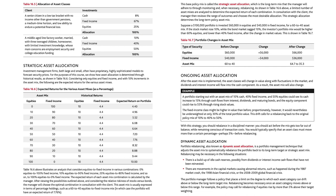Dynamic asset allocation, also known as portfolio rebalancing, is a portfolio management technique that adjusts the asset mix to systematically rebalance the portfolio back to its long-term target or strategic asset mix. Rebalancing may be necessary in the following situations: there is a buildup of idle cash reserves, possibly from dividends or interest income cash flows that have not been reinvested; there are movements in the capital markets causing abnormal returns (such as happened during the 1987 market crash, the 1998 Asian financial crisis, or the 2008–2009 global financial crisis); or the portfolio manager follows a policy that places a limit on the degree to which each asset category can drift above or below the long-term target mix.